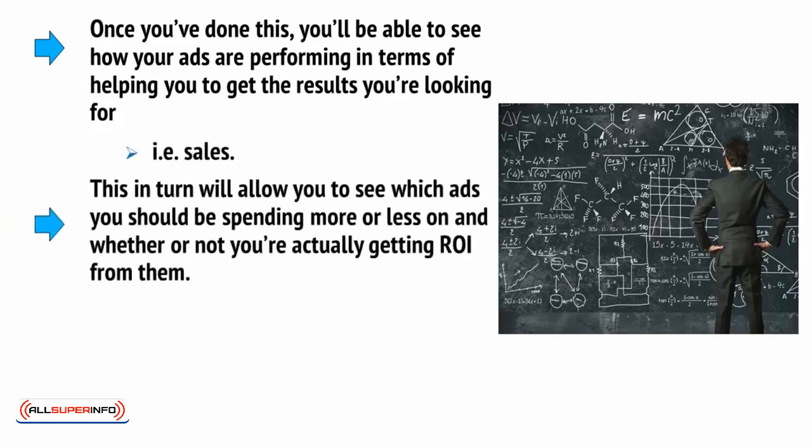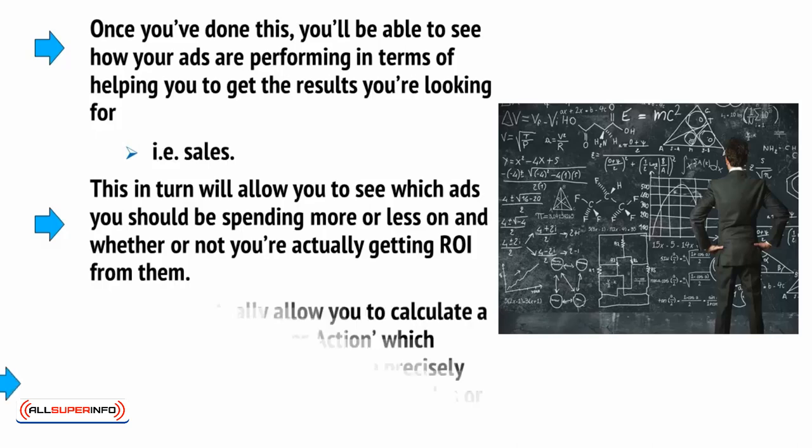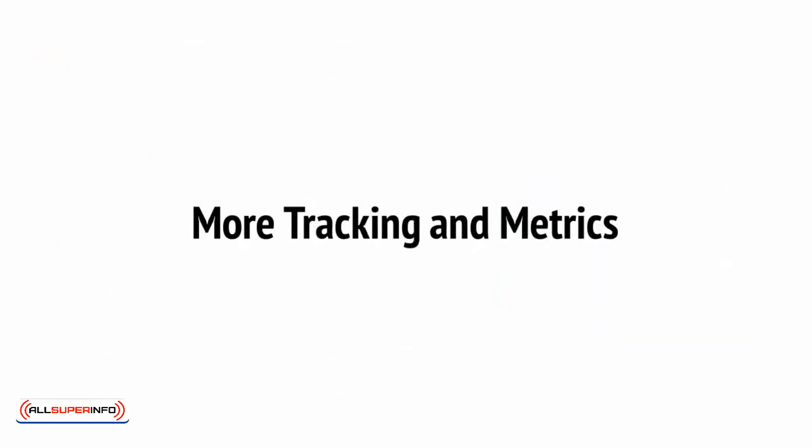This, in turn, will allow you to see which ads you should be spending more or less on, and whether or not you're actually getting ROI from them. This will eventually allow you to calculate a specific CPA, or cost per action, which means you're finding out more precisely how much it's costing you to make sales or get subscribers. You'll also be able to do a lot more tracking for your ads, and looking around the dashboard will help you to find all kinds of useful options.